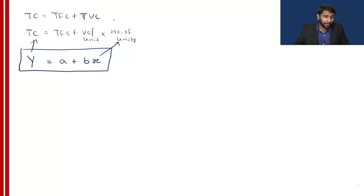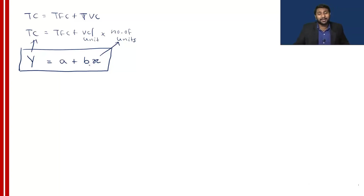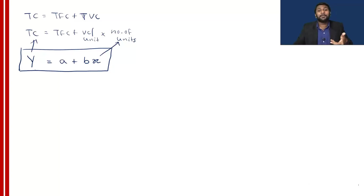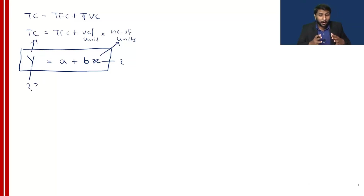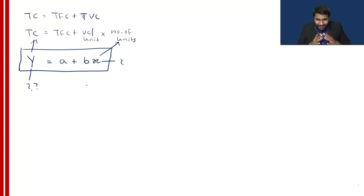What you have to understand in this formula: A is the fixed part. B is the variable value per one activity level. X is the number of units, number of machine hours, or whatever the activity level is. So simply using this formula, what we are going to find is: if you have some X amount, what will be your Y amount? A is the fixed part, B is the variable element per activity level. For a better understanding, let's do a small example.